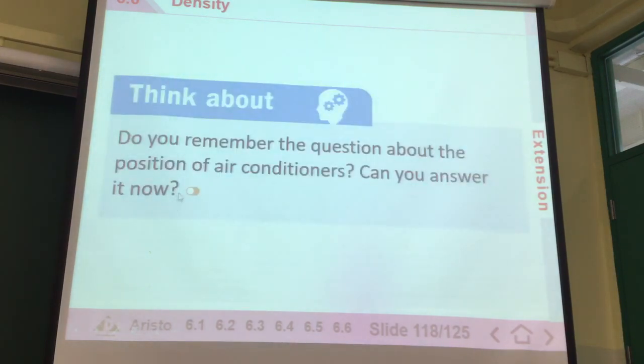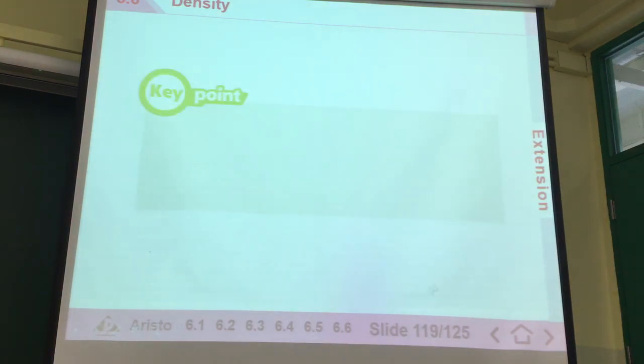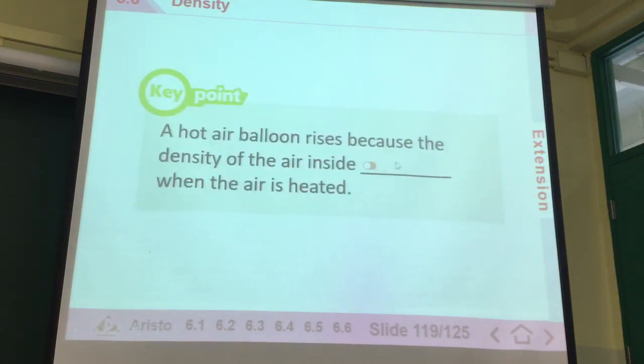This part I'm not going to talk too much. The cold air will be less dense. It will be denser than the warm air. The warm air will be on top, the cold air will be at the bottom. That's why you place the air conditioner on top. The cold air will come down because it will sink to the bottom more. So the room can be cooled more evenly and more effectively as well. Last is the key point. The hot air balloon rises because the density of air inside decreases when the air is heated.